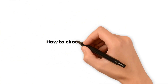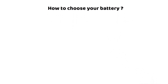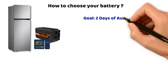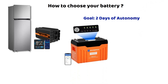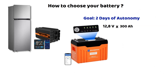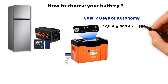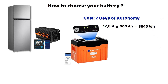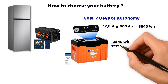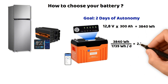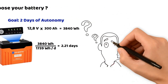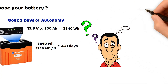Now let's see how to choose your battery to have a minimum level of autonomy — and when I say minimum, it really depends on each person and their usage. Here we'll assume you have no way of recharging for two days. We will choose a lithium battery of 12.8 volts and 300 ampere hours. Its capacity in watt hours: 12.8 times 300 equals 3,840 watt hours, or 3.84 kilowatt hours. To calculate autonomy, we divide 3,840 by 1,739 watt hours per day, which equals approximately 2.21 days. We will have more than two days of autonomy with this battery. But even with lithium, we will always keep 10% of capacity to preserve its lifespan.